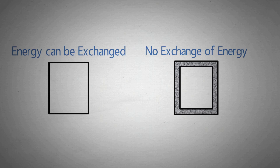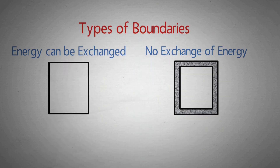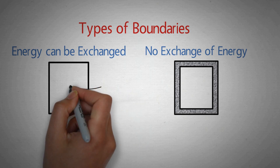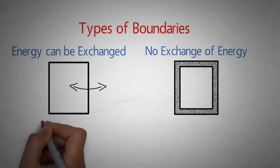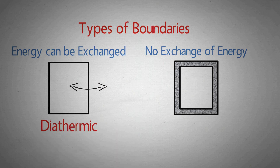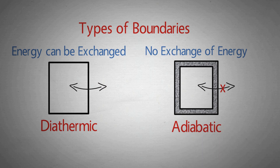Another criteria of categorizing boundary is if it can exchange energy with its surrounding or not. When the system is able to exchange energy with its surrounding, then the boundary is said to be diathermic. In case no exchange of energy is possible, the boundary is said to be adiabatic.